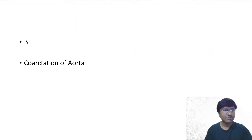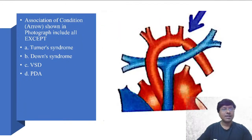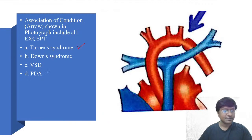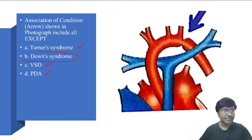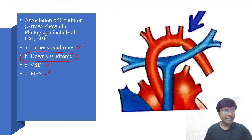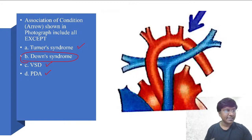Going back to the question: coarctation of the aorta can be seen in association with Turner syndrome, VSD, and PDA. But the question asks except — so in Down syndrome you will not have coarctation of the aorta. In Down syndrome you can have AV cushion defects, atrioventricular cushion defects, VSD, PDA, and tetralogy of Fallot.